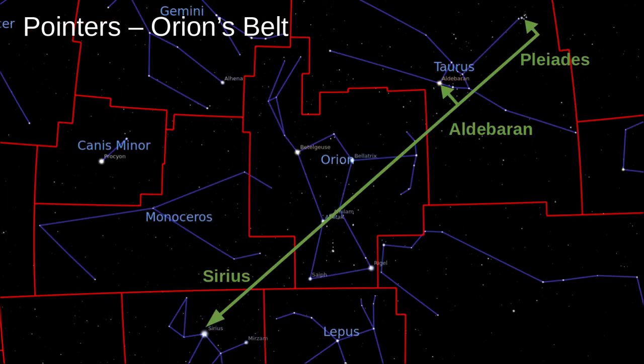Orion's Belt points to three well-known objects. Draw a line through the belt to the left and you'll find Sirius, the brightest star in the sky. Draw the line to the right, and just above that line, you'll first find Aldebaran, another bright star, and then Pleiades, the Seven Sisters.